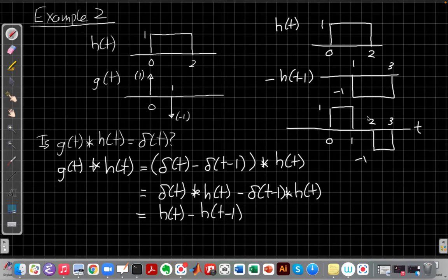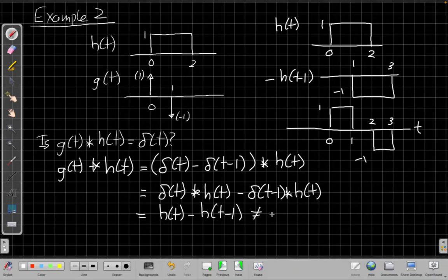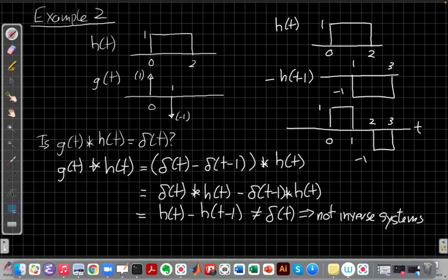And so this is the result of convolving the two, and it's definitely not the unit impulse function. Right? So I can look at the figure. If it wasn't already clear enough, drawing that figure makes it clear that this is not the unit impulse function. And so what we have here is not, these two are not inverse systems.